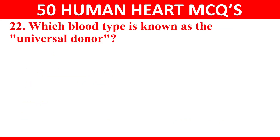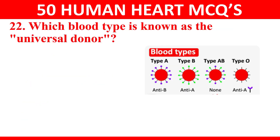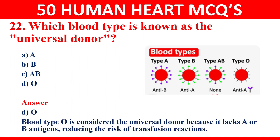Question 22: which blood type is known as the universal donor? Options are A, B, AB, and O. The answer is O. Blood type O is considered the universal donor because it lacks A or B antigens, reducing the risk of transfusion reactions.